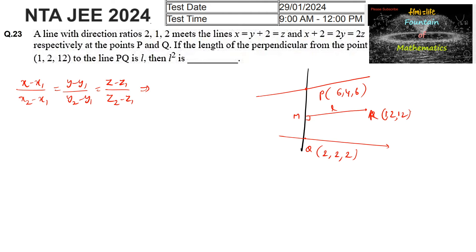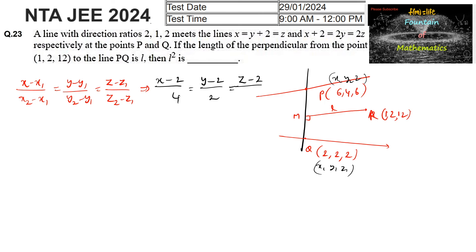Taking Q(2,2,2) as (x1,y1,z1) and P(6,4,6) as (x2,y2,z2), the equation of line PQ is (x-2)/(6-2) = (y-2)/(4-2) = (z-2)/(6-2), which simplifies to (x-2)/2 = (y-2)/1 = (z-2)/2.